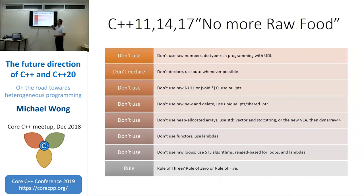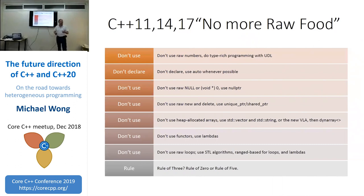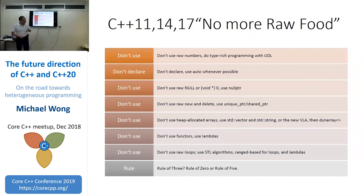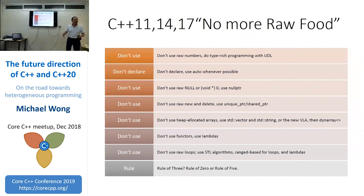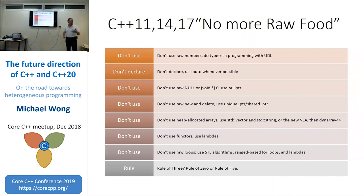Before C++11, you had to declare things explicitly. You should try to use auto as much as possible. You were forced to use null and void star zero; nowadays you should be using nullptr. You now have unique pointers and shared pointers, which combine type and ownership so you don't forget to specifically delete objects.